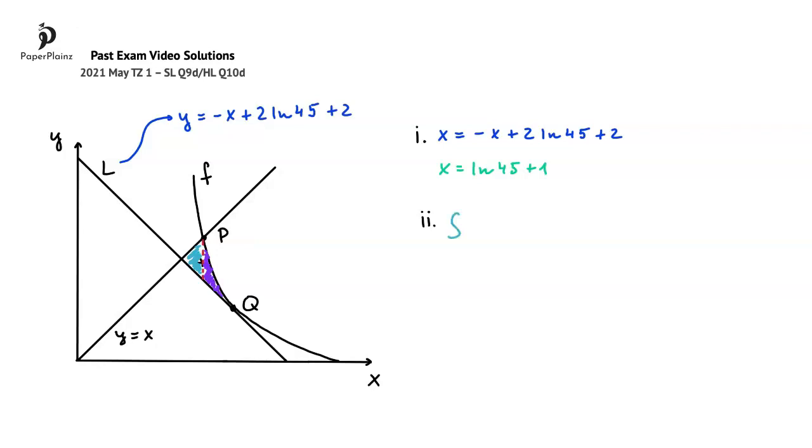The lower bound of the integral is the x-coordinate of this intersection point. We just found that this x-coordinate is ln 45 plus 1. The upper limit of this area is the x-coordinate of point B, and from our answer to question part A, this is 5.57.